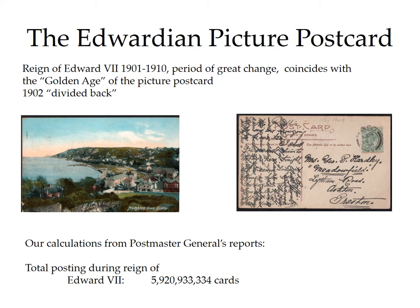From 1902 we had the divided back, a more familiar form of postcard. So the whole of one side was taken up by the picture, and the other was divided between the name and address and the writing. In this case the card is going to Mrs Hardley, and you can see that the writer has done what we call cross-hatching — writing in two directions — and we'll come back to that later.